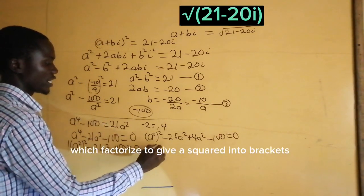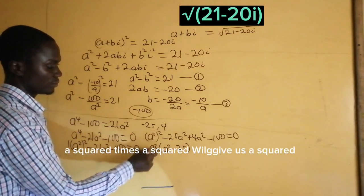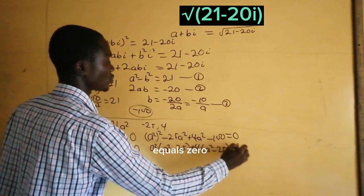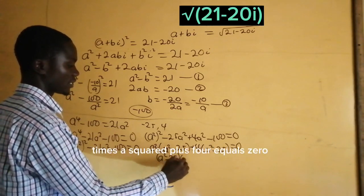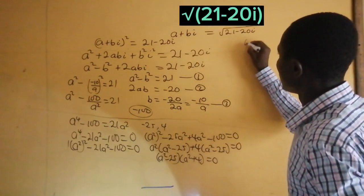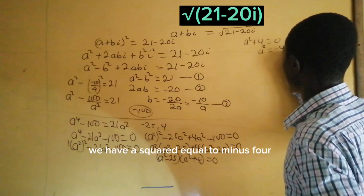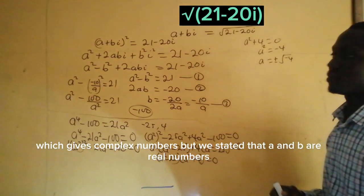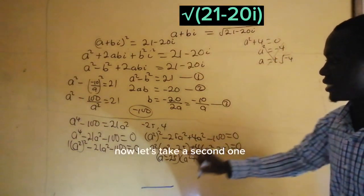Which factorizes to be (a squared minus 25)(a squared plus 4) equal to 0. Now, if we take a squared plus 4 equal to 0, we have a squared equal to minus 4, and then a would be equal to plus or minus the square root of negative 4, which gives complex numbers. Since we stated that a and b are real numbers, we discard this solution.